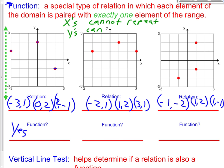Let's look at our last relation. The x-values are -1, 1, 1. We have 1 and 1 repeating, so this is not a function. Whenever you get a list of ordered pairs, just look at the x's — they cannot repeat. If they do, it's not a function.